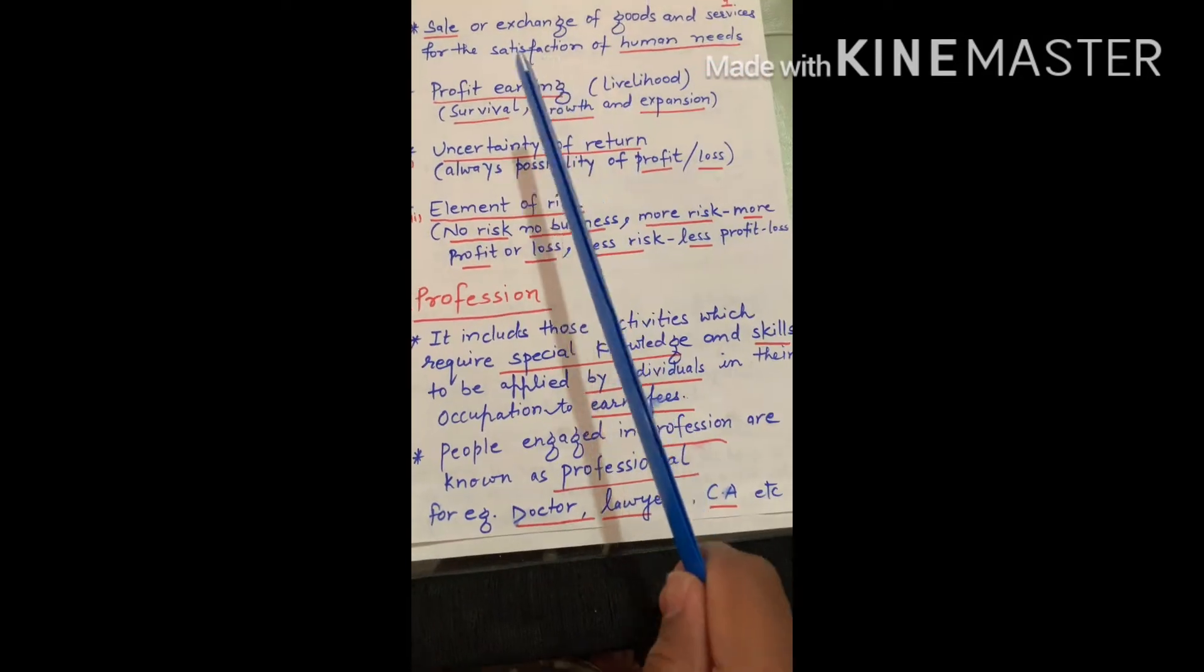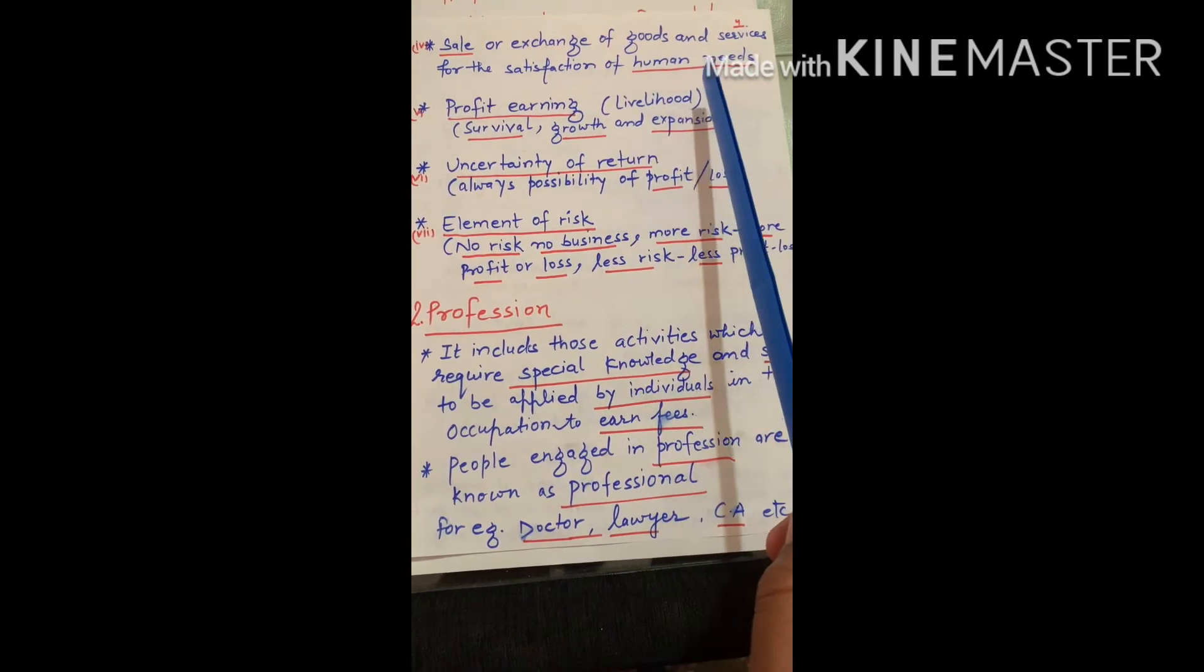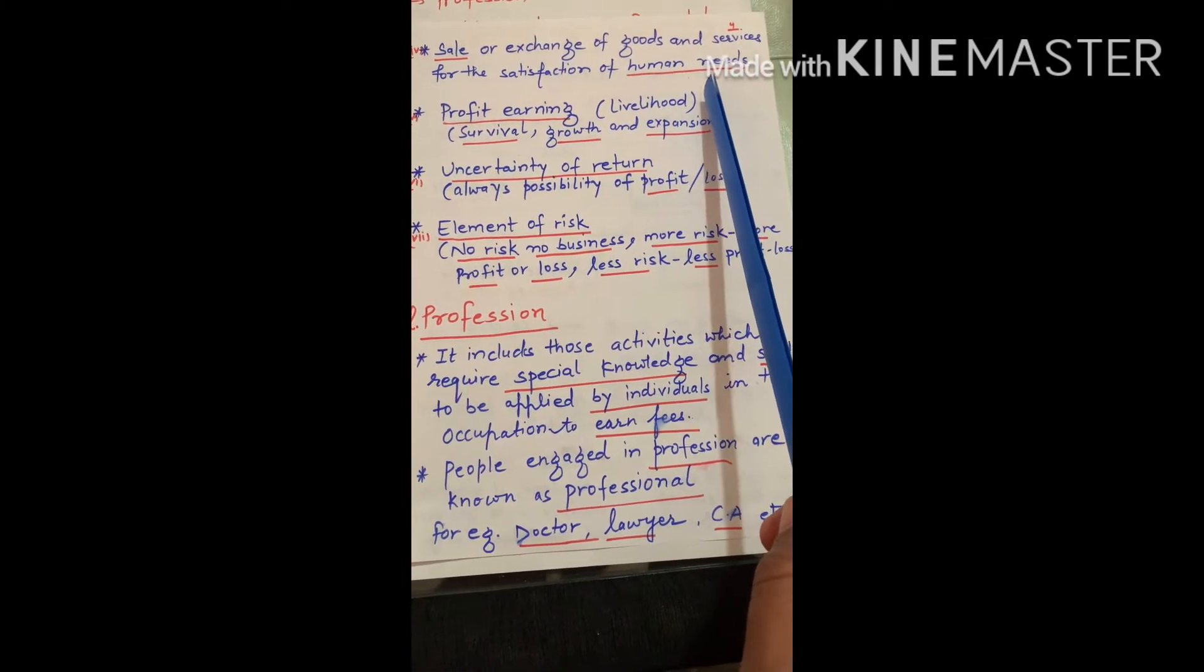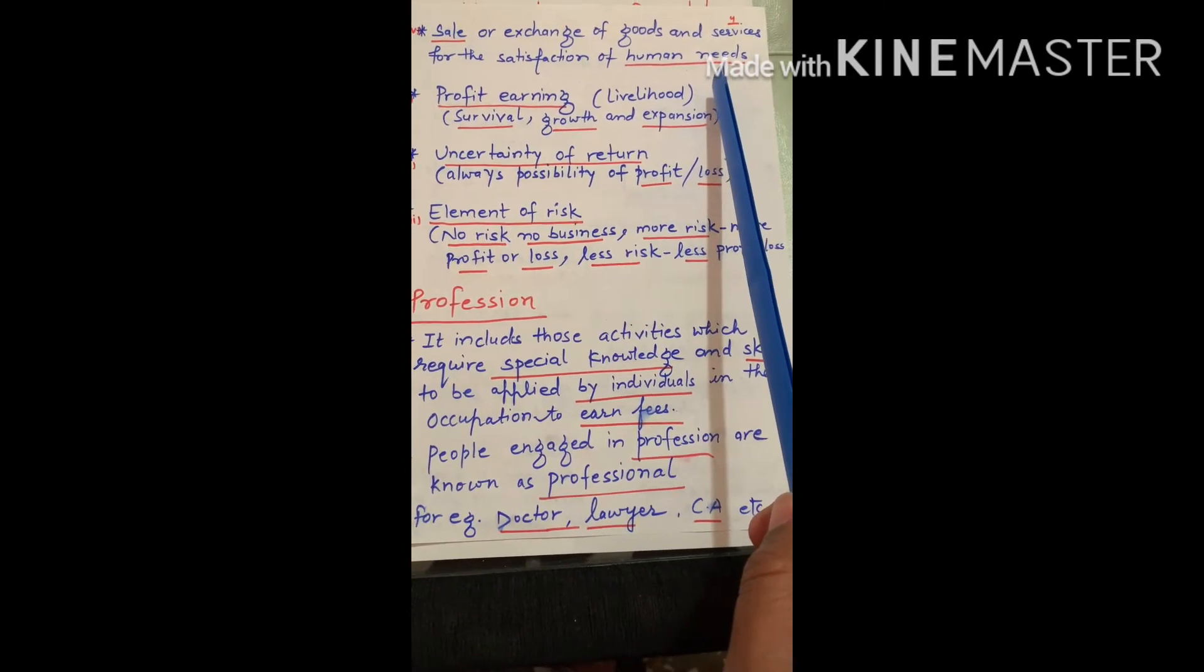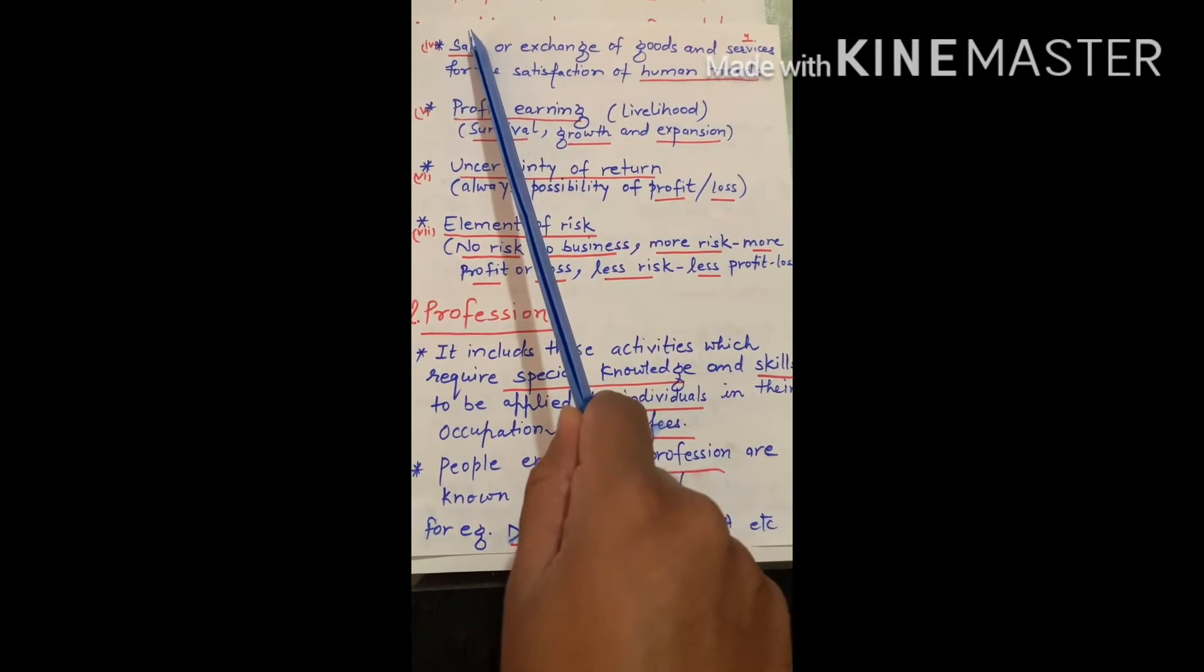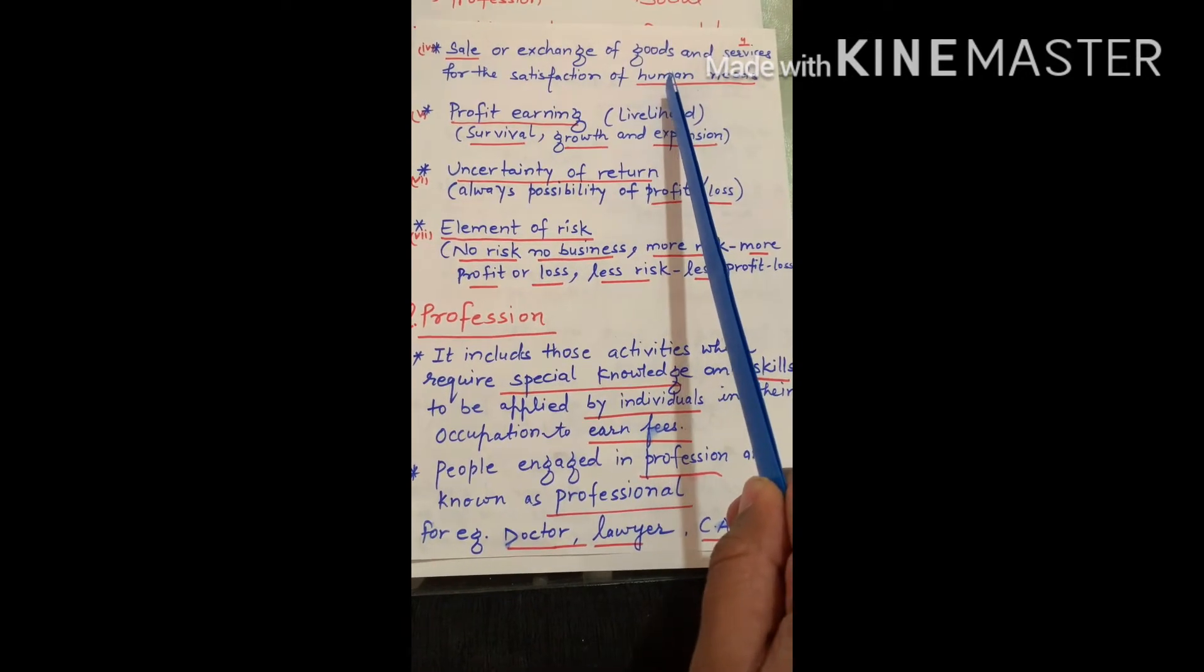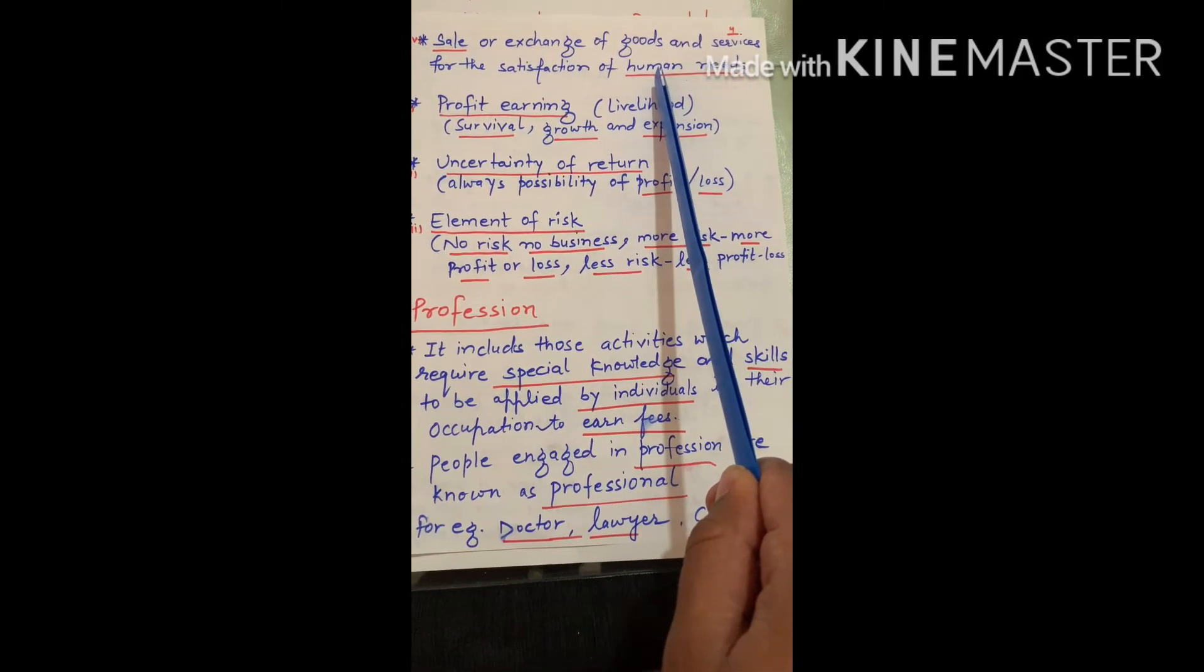Fourth is sale or exchange of goods and services for satisfaction of human needs. So that he satisfied the human needs. That is called the business.